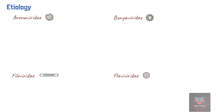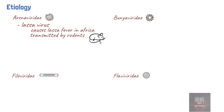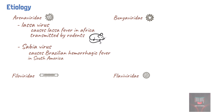Examples of viruses in the Arenaviridae include Lassa virus, which causes Lassa fever found in Africa and transmitted by rodents, and Sabia virus, which causes Brazilian hemorrhagic fever found in South America and also transmitted by rodents.